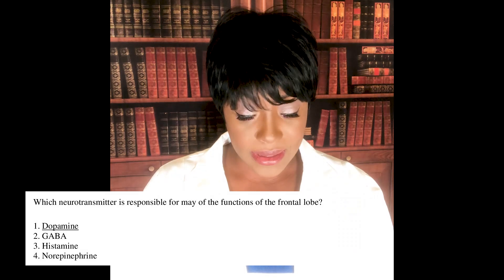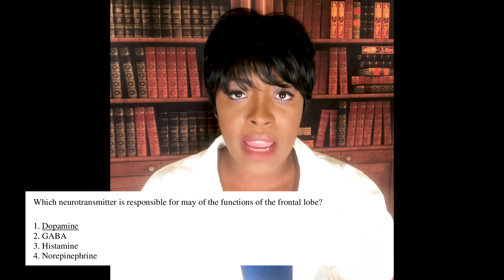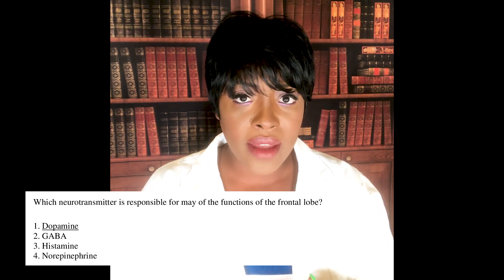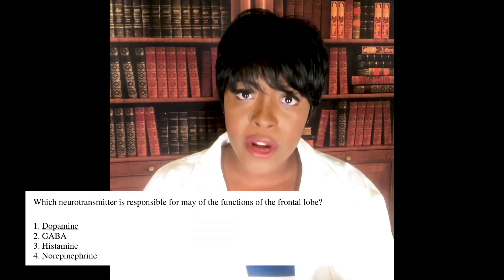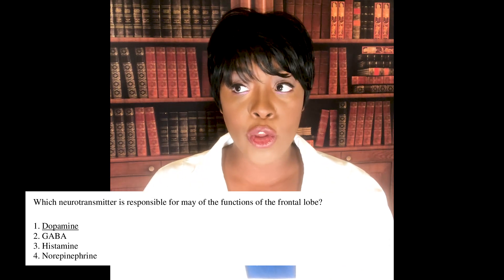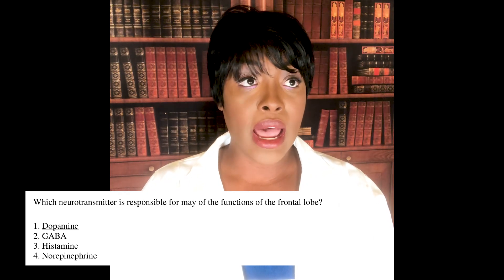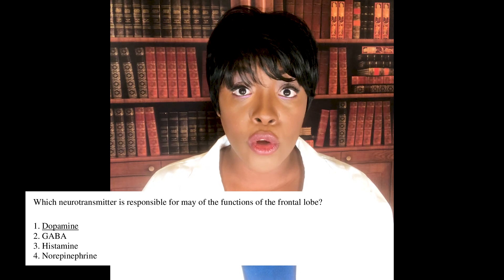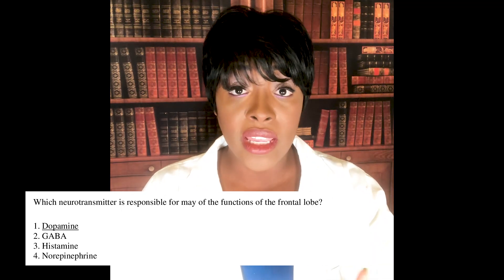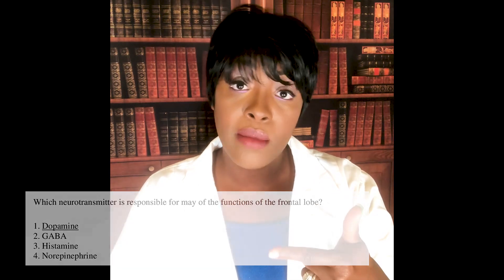The correct answer is dopamine. Dopamine is responsible for affect, planning, and that type of higher-level thinking in the frontal lobe. Patients who don't have enough dopamine can develop conditions like Parkinson's disease or schizophrenia. This was essentially a definition question — no critical thinking involved. You either know it or you don't, so it's very important to know: dopamine, frontal lobe, affect and planning, and conditions associated with deficiency.